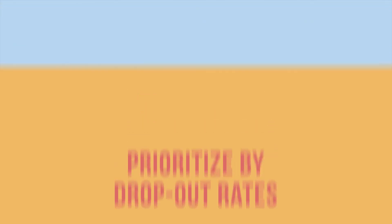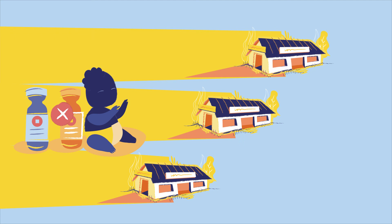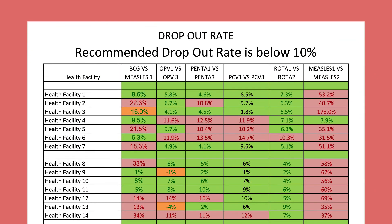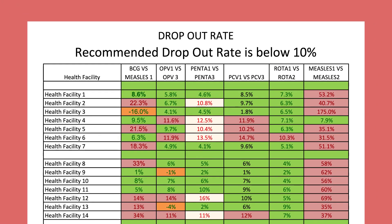If you do not feel confident about your population data, another useful way to prioritize is by dropout rates or the number of unimmunized due to dropouts, since those numbers may be more reliable. Look for areas where the dropout rate between pentavalent 1 and pentavalent 3 is 10% or higher, or the dropout rate between pentavalent 1 and measles is 10% or higher. This is a sign that children may have initial access to vaccines but then fail to complete the vaccination series for some reason.